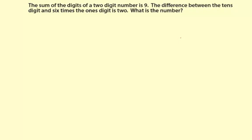The sum of the digits in a two-digit number is 9. The difference between the 10's digit and 6 times the 1's digit is 2. What is the number?